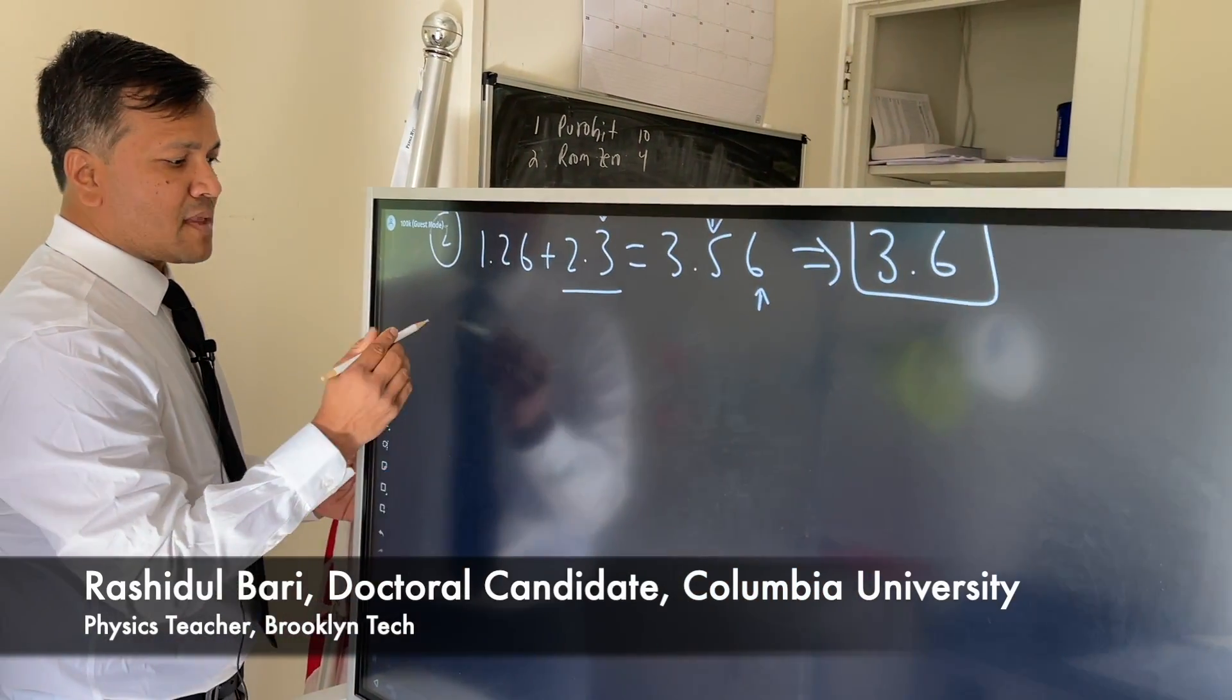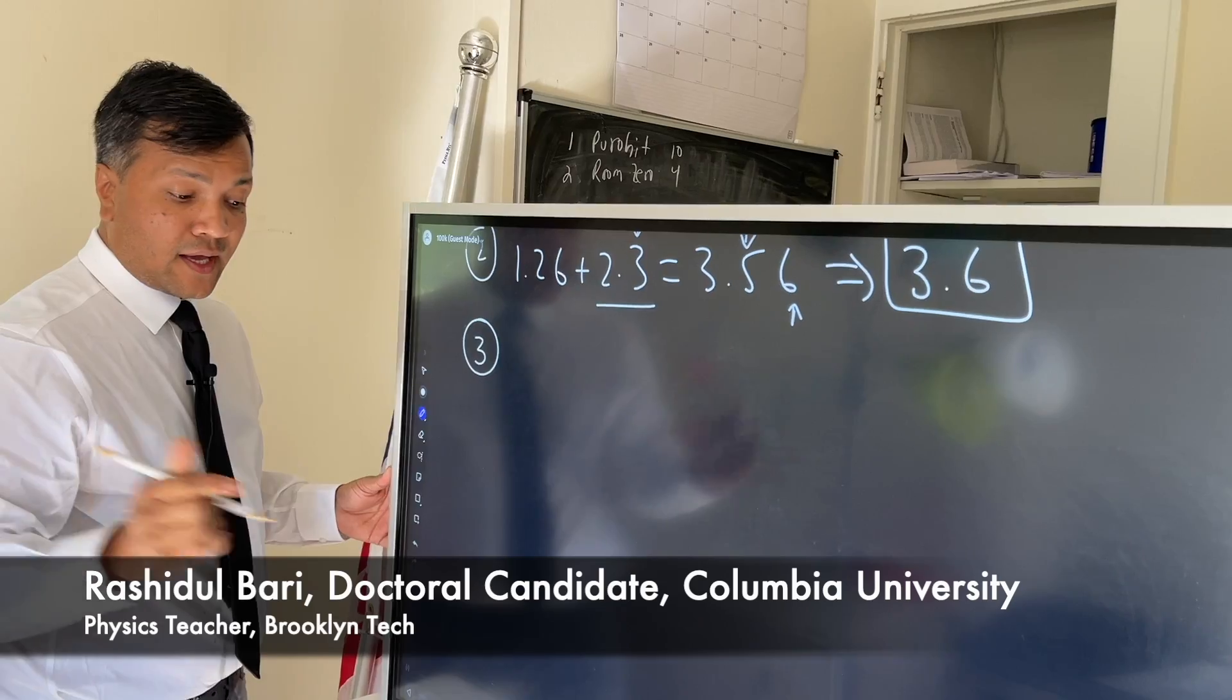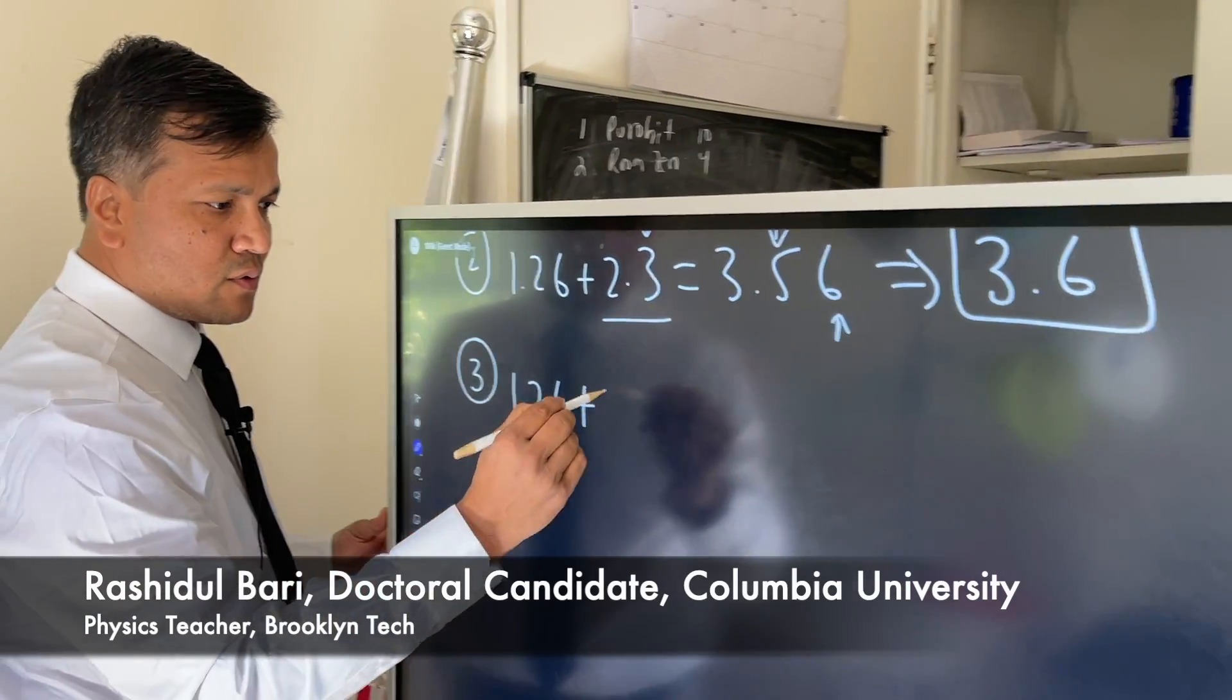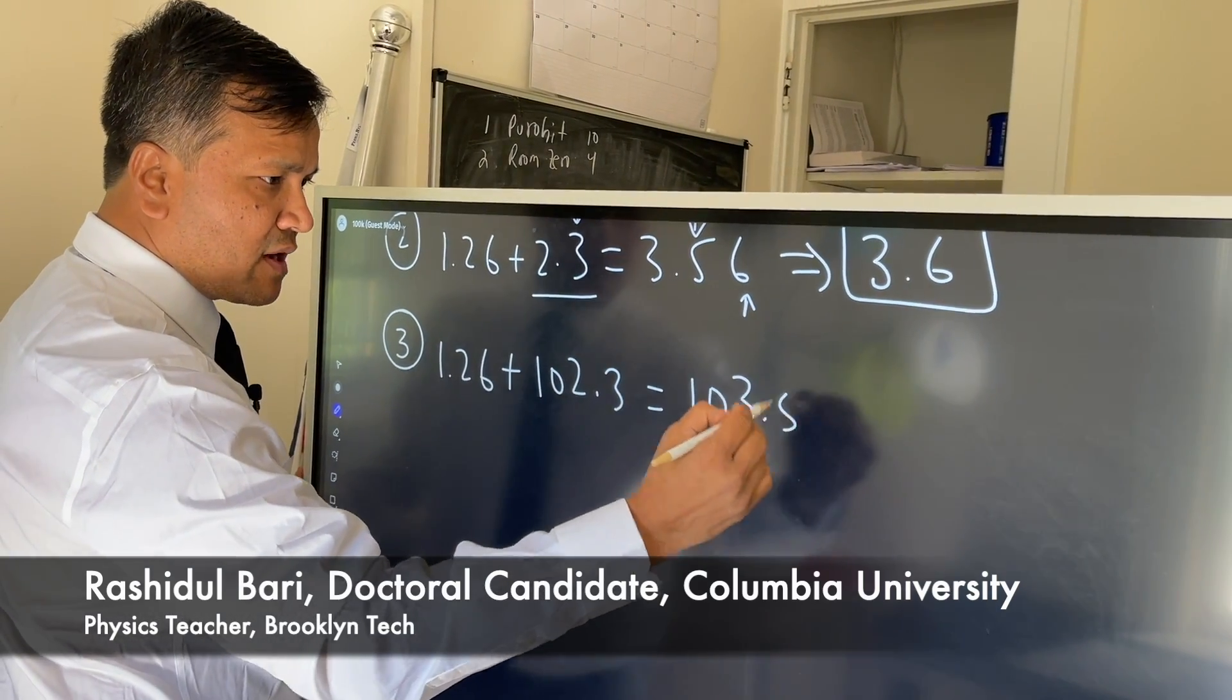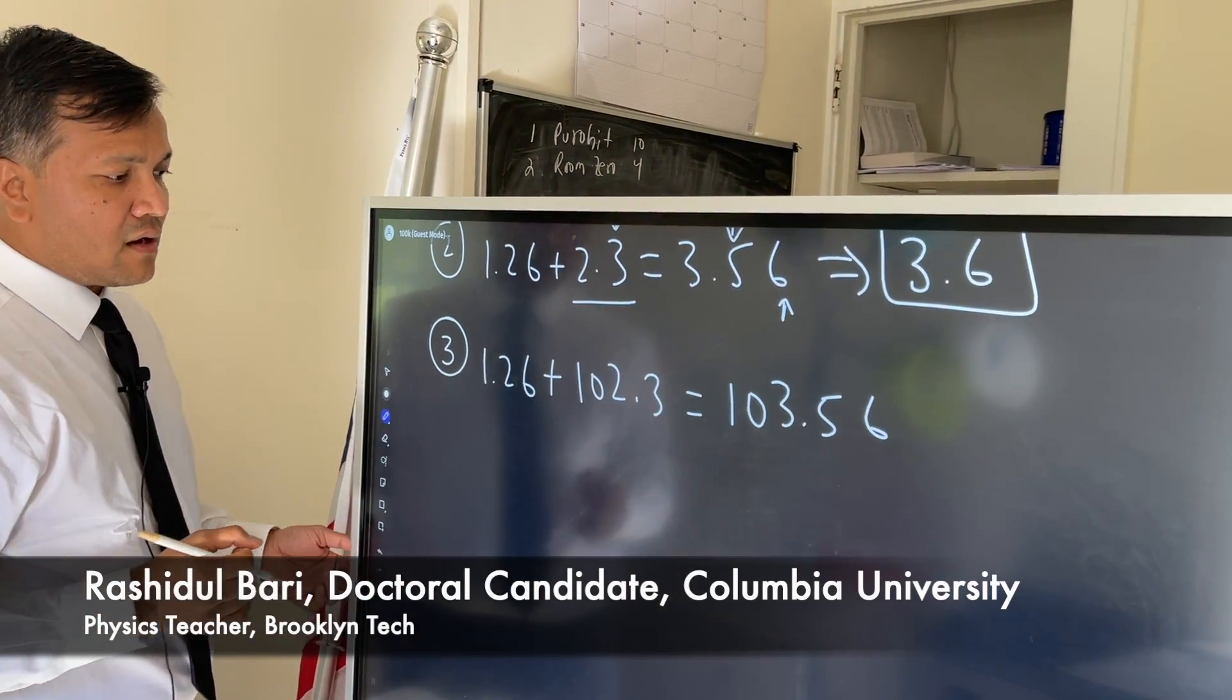Number three, you should try: 1.26 plus 102.3, which equals 103.56. Now which one is our least precise?